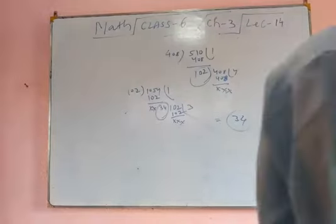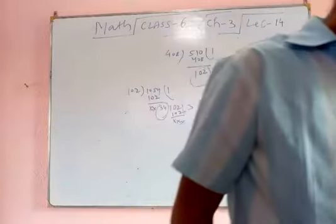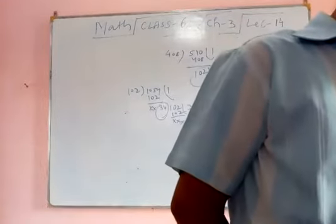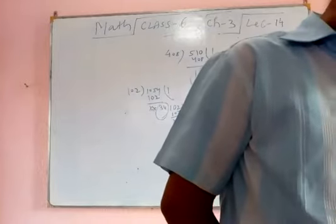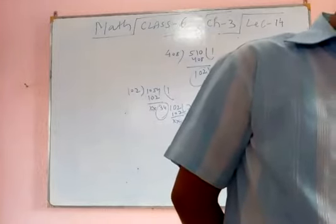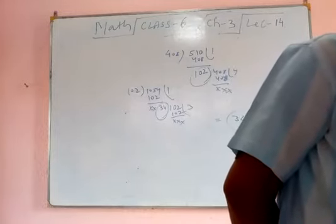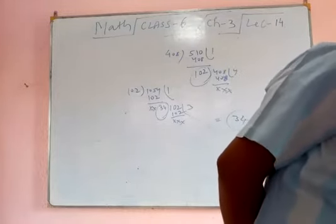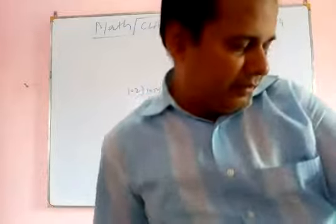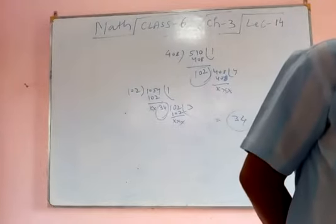The length, breadth and height of a room are 9m 75cm, 8m 25cm and 6m respectively. Determine the longest tape which can measure the three dimensions of the room exactly.